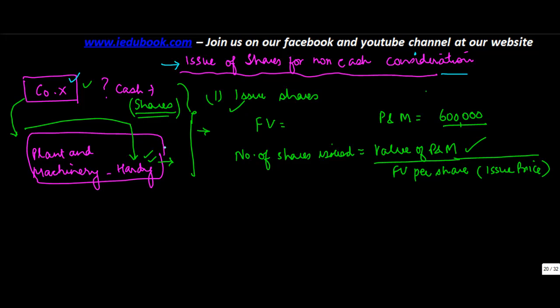Company X purchases plant and machinery from Hardy Limited and issues shares as consideration. Let's say the issue of shares is made at a premium of rupees 20 per share. The face value of the shares is 100.